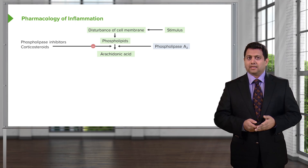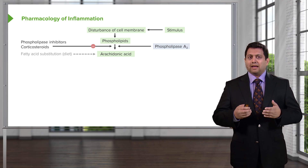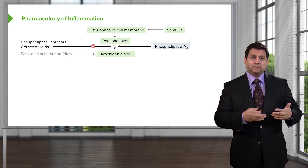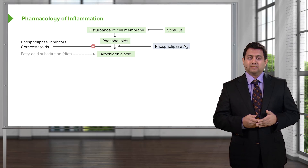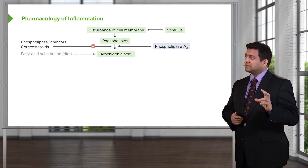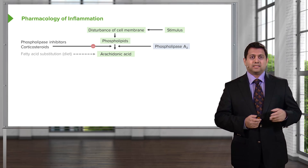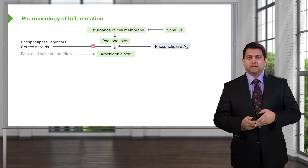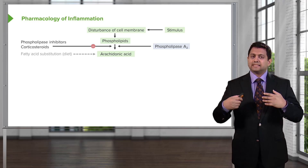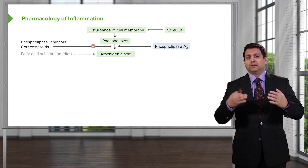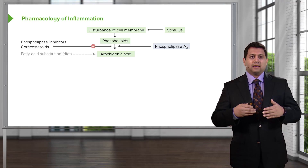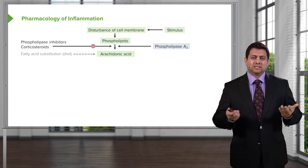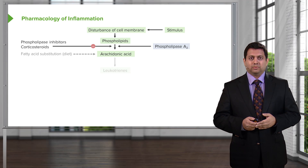Arachidonic acid levels are also increased with a high fatty acid diet. So if we theoretically substitute a high fat diet with a low fatty acid substitution diet, we may be able to reduce the levels of arachidonic acid in our body. That's the theory behind a naturopathic movement to have a fatty acid substitution diet to reduce inflammation. Unfortunately, it doesn't work as well in the real world as we would have thought.